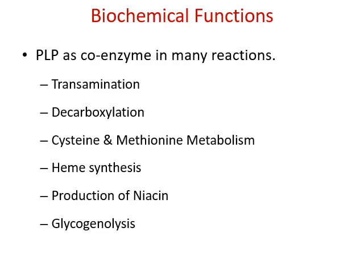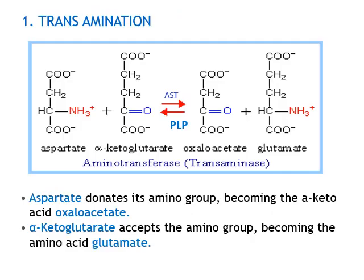The biochemical functions of pyridoxal phosphate, or PLP, which is the active form, include its role as coenzyme in many reactions such as transamination, decarboxylation, cysteine and methionine metabolism — these three fall under protein metabolism — as well as roles in heme synthesis, production of niacin, and glycogenolysis.